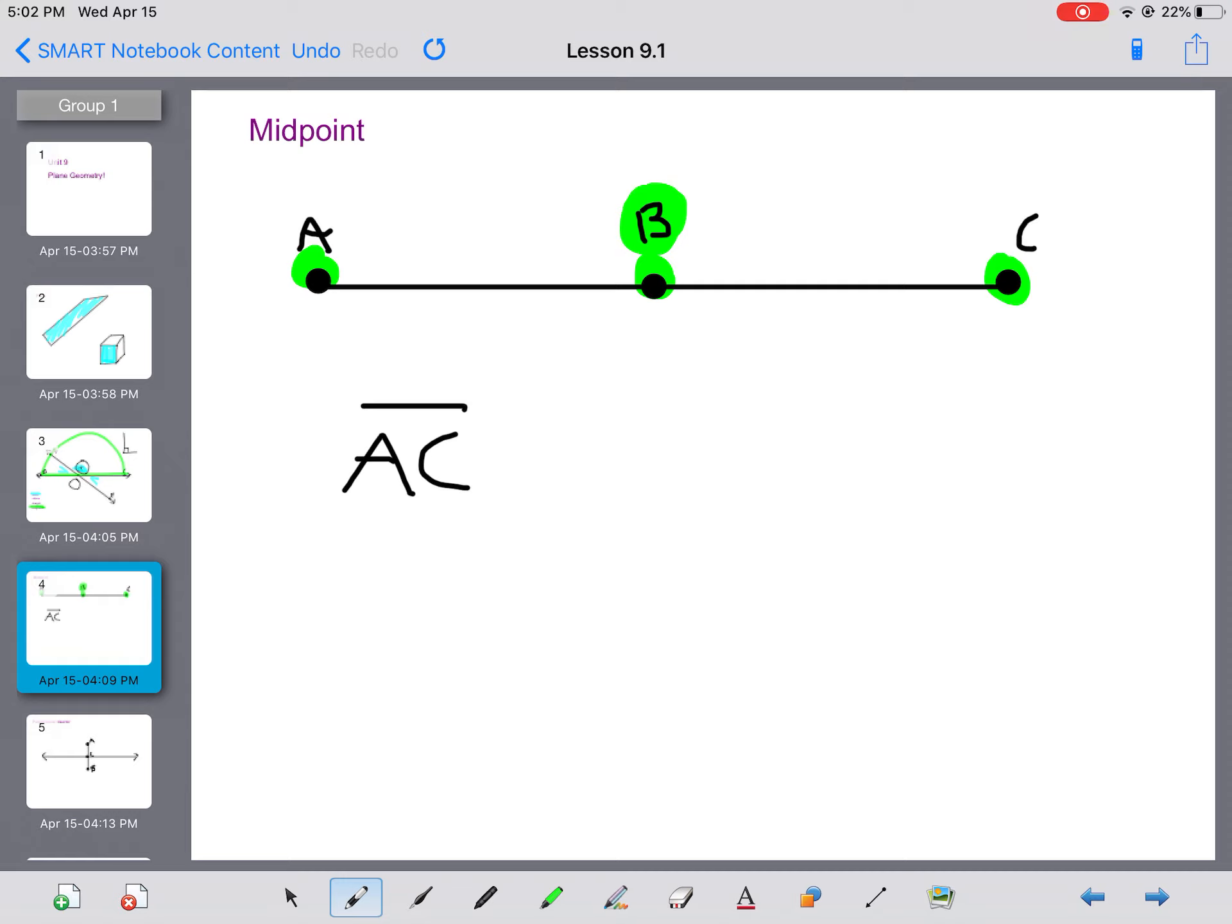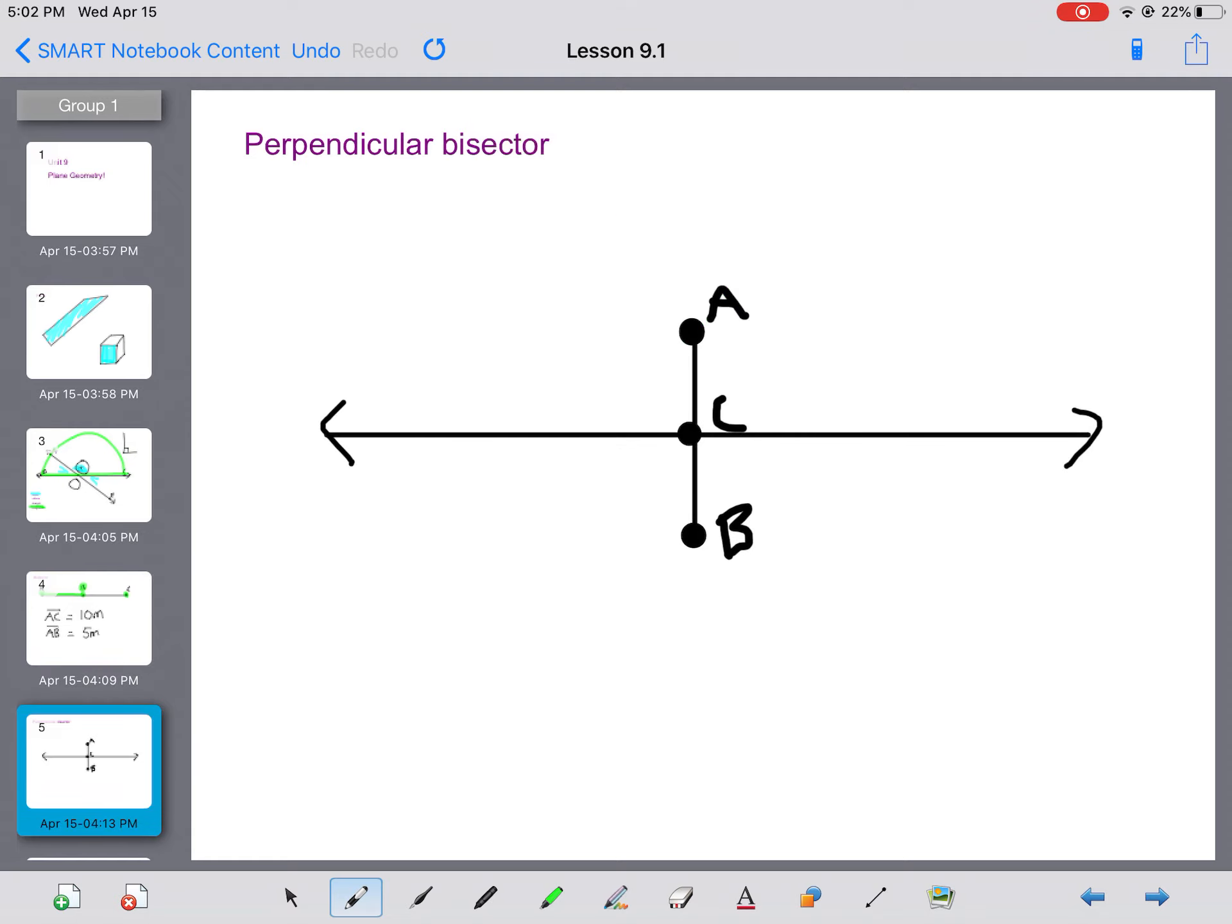If I said to you, line segment AC equals 10 meters, and I told you that B was the midpoint, could you easily figure out what line segment AB is? If B is the midpoint, we can figure out how far AB goes because it is the midpoint. So it's half of AC. So AB would be five meters. That's why it's useful to know what the midpoint is. It's halfway between the two points to make up our line segment.